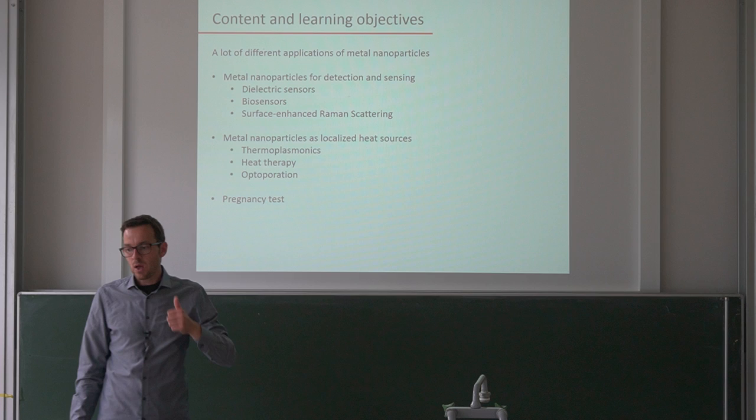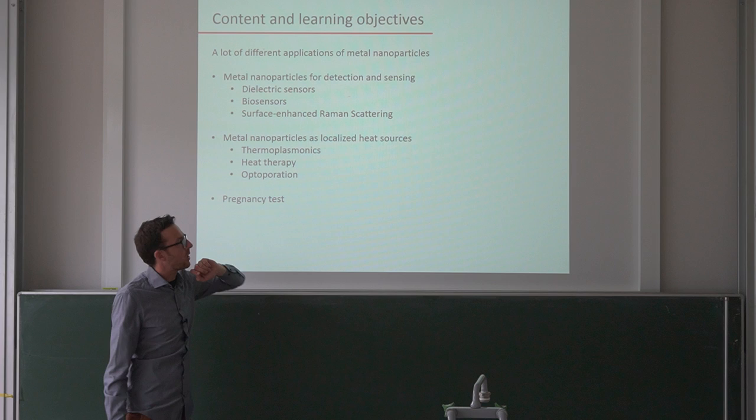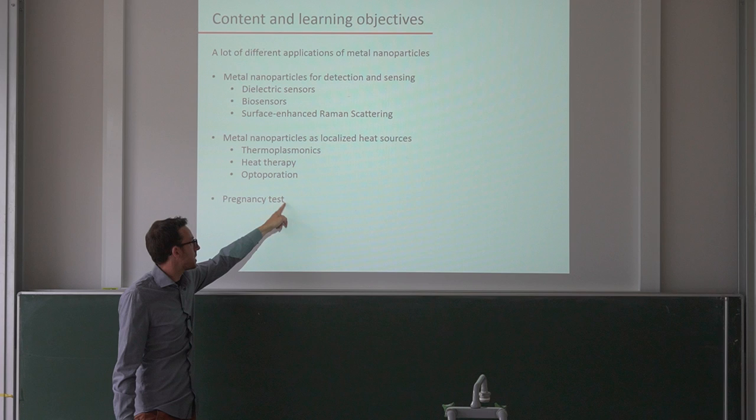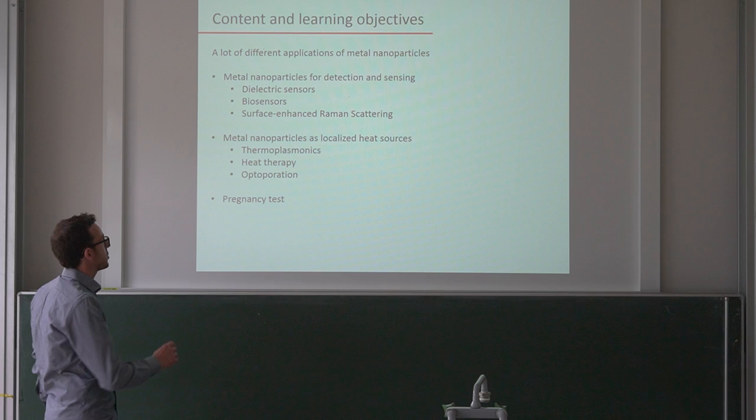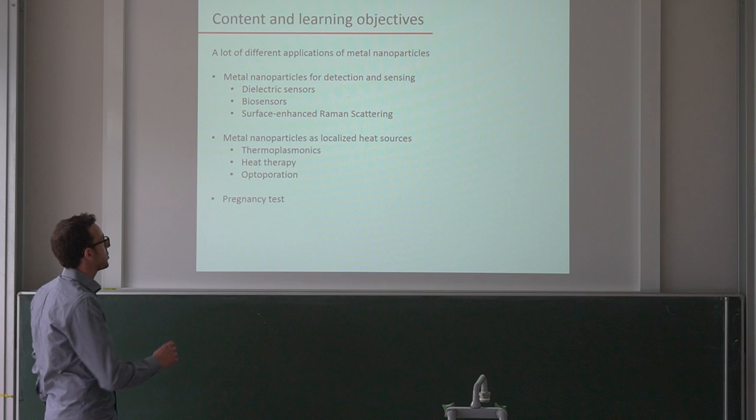What we want to discuss is, first, how we can use metal nanoparticles for detection and sensing; secondly, how we can use metal nanoparticles as localized heat sources; and thirdly, a commercial example of gold nanoparticles involving color change — the pregnancy test. Let's jump directly in and discuss how metal nanoparticles can be used for sensing.